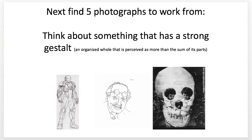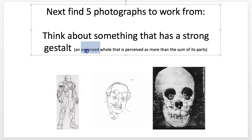Next up, you need to find your photographs to work from. Think about the gestalt — defined as an organized whole that is perceived as more than the sum of its parts. This skull image is a good example: it's like a skull overall, but also made of individual pieces. You want to think about the overall shape and do drawings on there — not just simple line drawings, but start defining the surface through more lines, like the contour drawings I showed you.